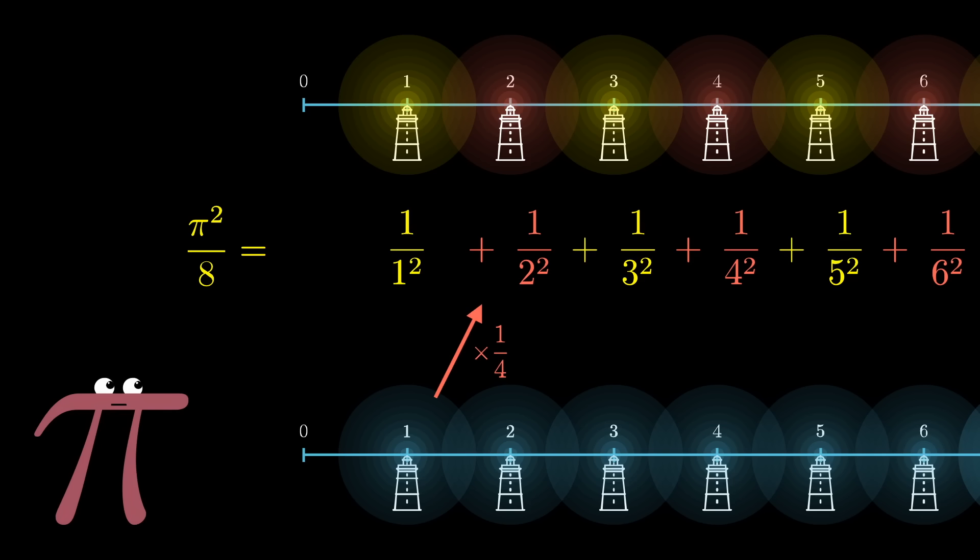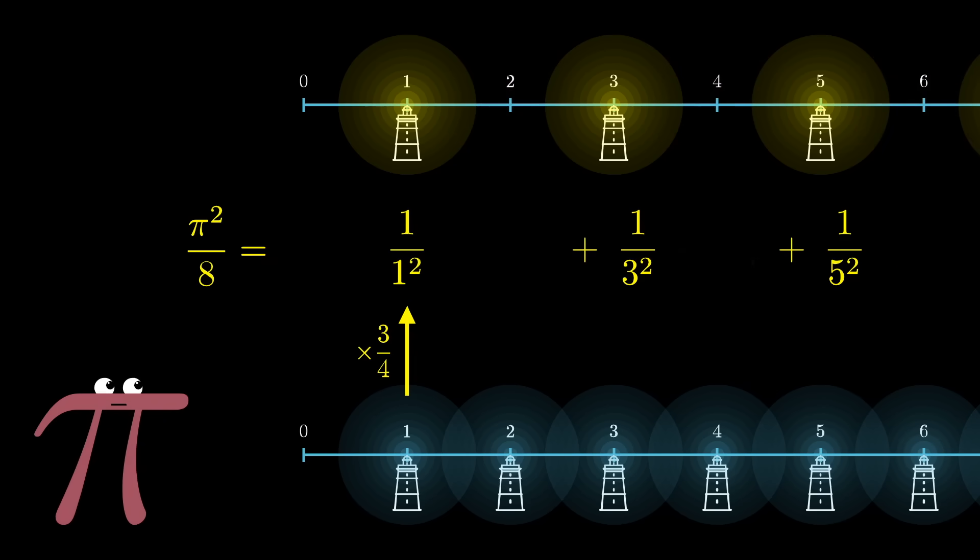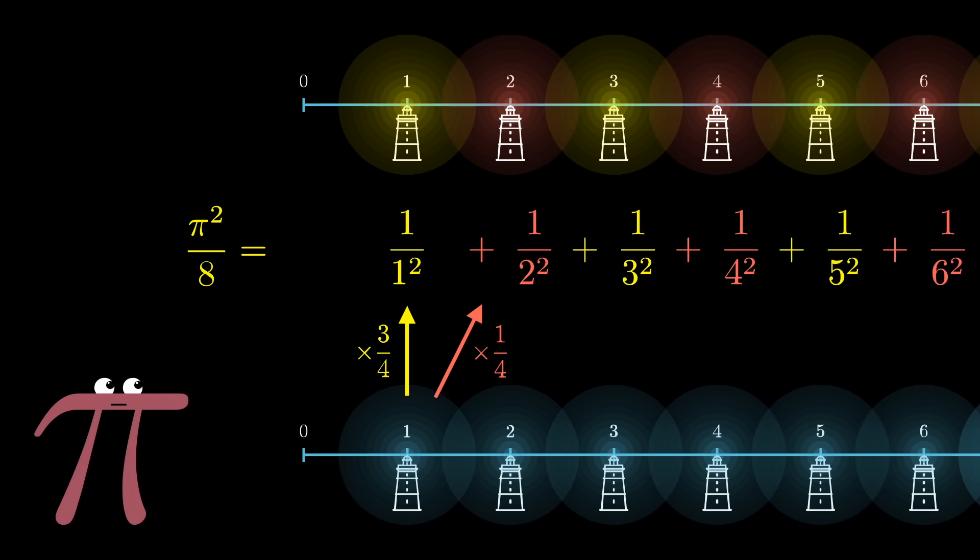And that's also relatively straightforward algebra. Going from the sum over all the integers to the sum over the even integers involves multiplying by 1/4. And what that means is that going from all the integers to the odd ones would be multiplying by 3/4, since the evens plus the odds have to give us the whole thing.